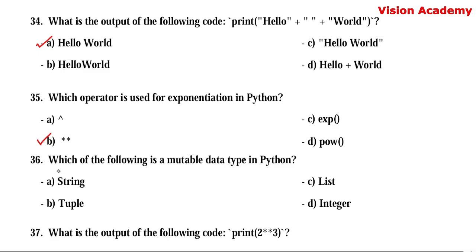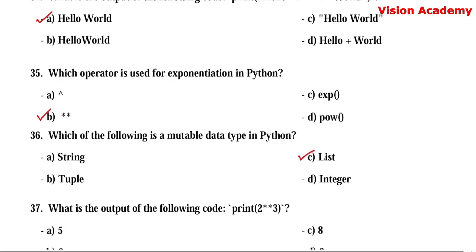Question number 36. Which of the following is a mutable data type in Python? Option A: string. Option B: tuple. Option C: list. Option D: integer. Here, the right answer is option C — list is a mutable type of data.